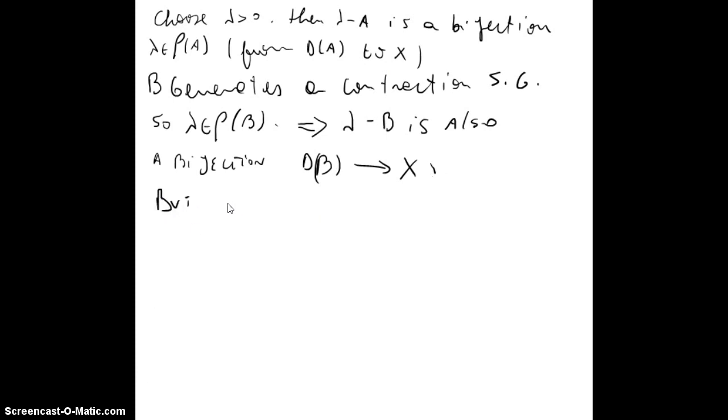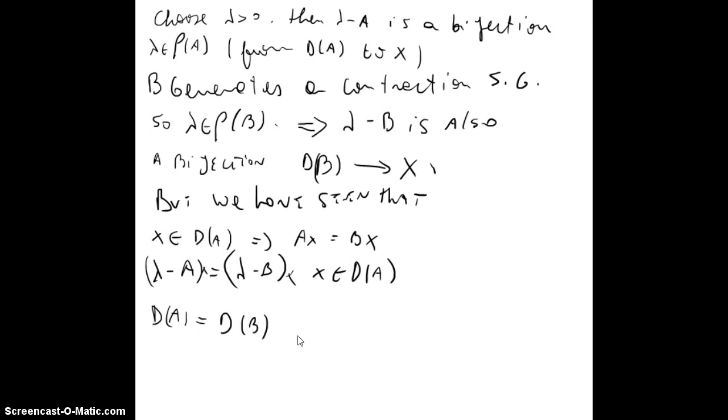But we have seen that if x is in DA, then Ax is equal to Bx. And now we have that lambda minus A will have to be equal to lambda minus B, at least if x is in the domain of A. I'll put an x here and x here. So I'm not going to prove it, but if this happens, this can only be possible only if DA is equal to DB and A is equal to B now for all x.